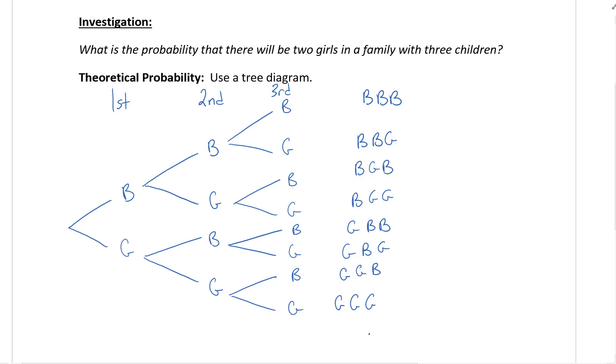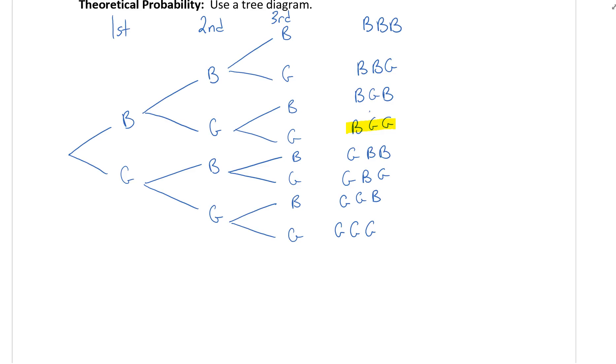Now the question is what is the probability that there'll be two girls? So I'm going to look at all my outcomes that have two girls. So there's one, here's another one, and then there's one more. All the rest of these have either more or less than two girls. So how would we write this out as a probability? Well the probability of a family having two girls out of three children, well the total number of outcomes was eight and we have three out of a possible eight.